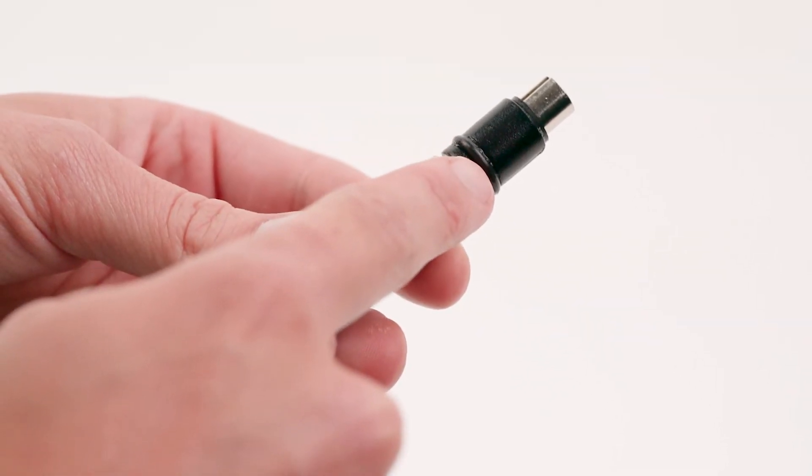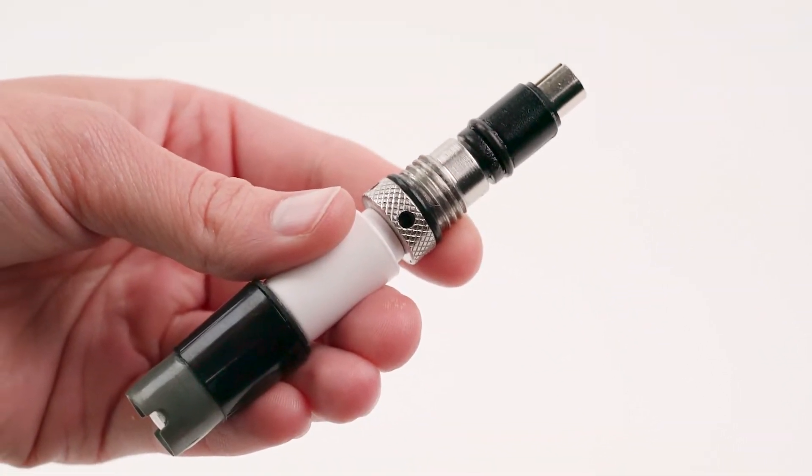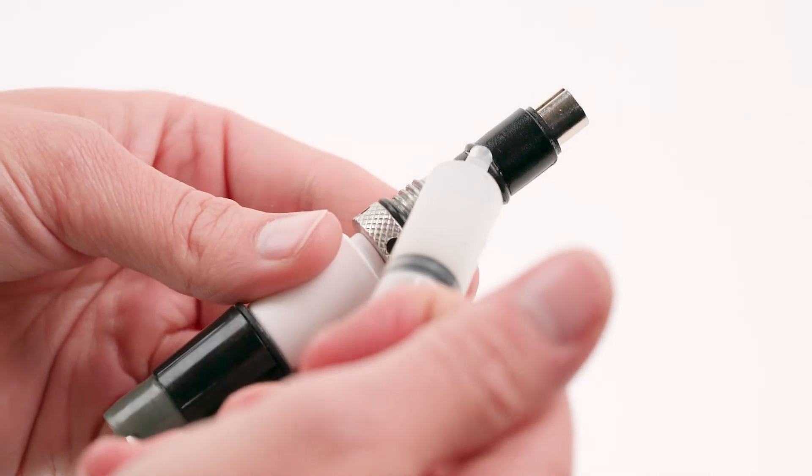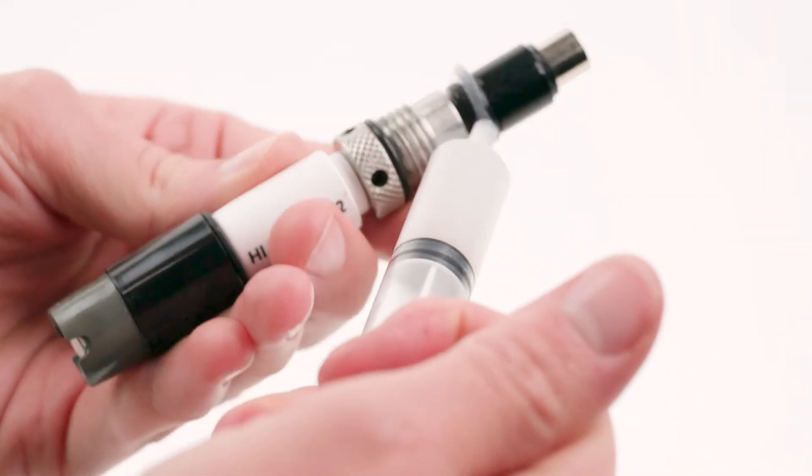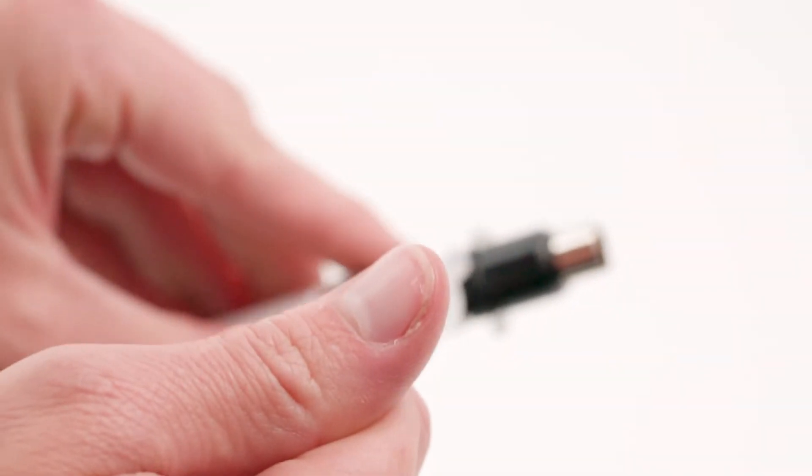Before replacing each sensor, check to make sure the o-ring is in place. Apply a generous amount of grease to the o-ring. This will help the seal and also keep the o-ring conditioned.